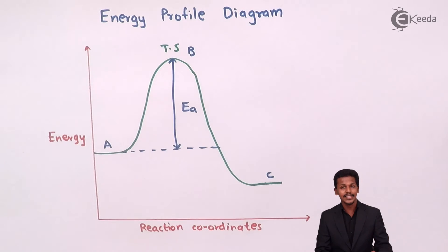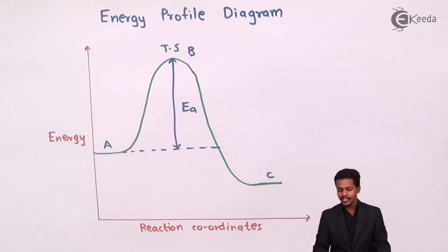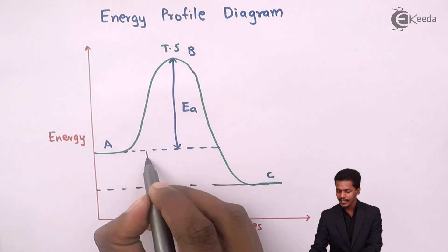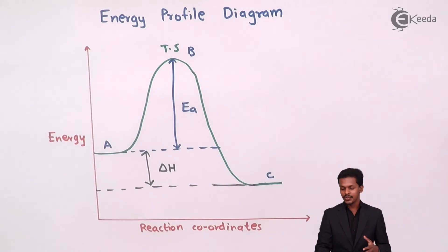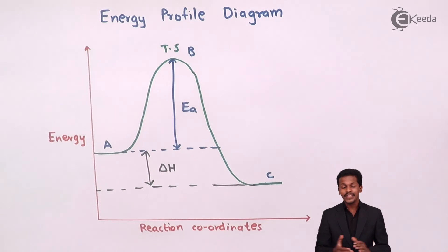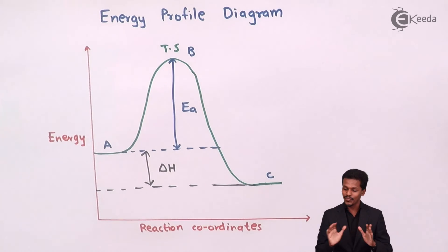Comparing with the SN1 energy profile diagram, SN1 showed two humps while SN2 shows only one hump because there is only one transition state in SN2. The difference in energy between the reactant (A) and the product (C — the inversion configuration product) is denoted as ΔH, the heat of reaction. Since the product has less energy than the reactant, this indicates an exothermic reaction where energy is evolved as heat.